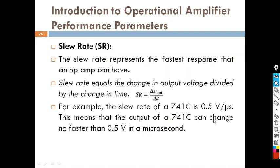The next parameter is called Slew Rate. Slew Rate is the parameter that describes how quickly the output changes to a particular value within a particular time period. For example, if the output of the operational amplifier changes to 4 volts within a microsecond, then slew rate is equal to 4 divided by 1 microsecond. If the output reaches 6 volts, then it is 6 divided by 1 microsecond.